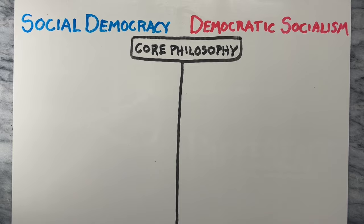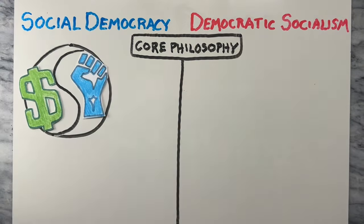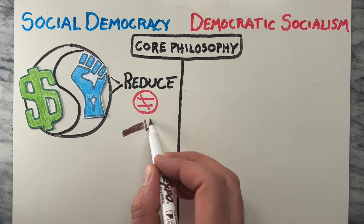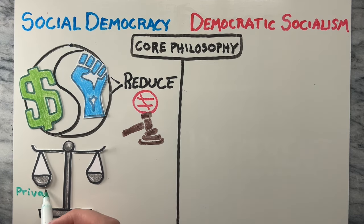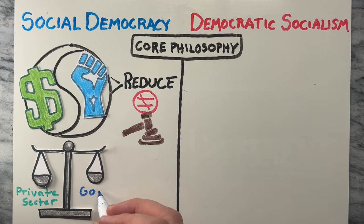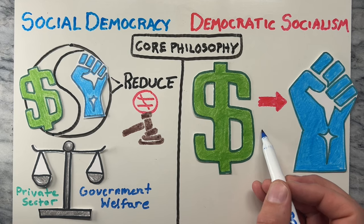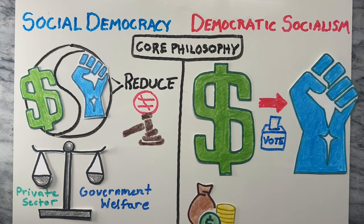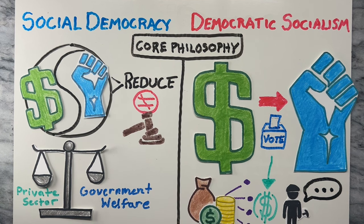Let's first compare their core philosophies. Social democracy advocates for a mixed economy, combining market-oriented capitalism with social policies aimed at reducing inequality and ensuring social justice. Its core philosophy is to strike a balance between the private sector and the government's role in promoting welfare. Democratic socialism seeks to transform capitalist societies into socialist ones through democratic means. It advocates for the redistribution of wealth and the democratization of the economy, where workers have a greater say in decision-making processes.